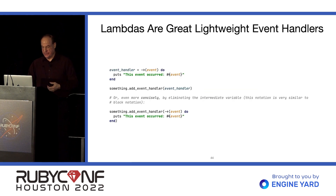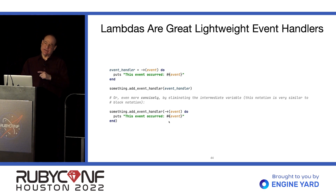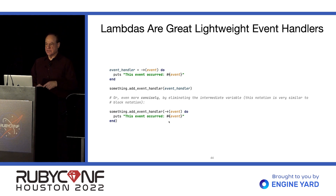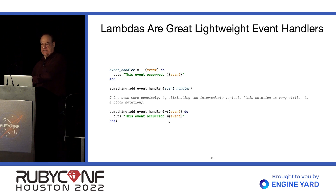Lambdas are great lightweight event handlers. You can define a lambda, put it in a variable and pass it, or just define it in place without assigning it to a variable. Check out this notation and compare it with what it would look like if you were passing a code block — it's almost the same. The only difference is the parentheses and the arrow. Syntactically, it's really no big deal to use a lambda instead of a block.